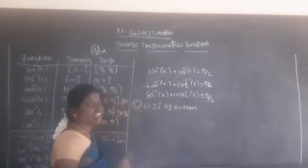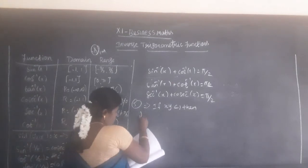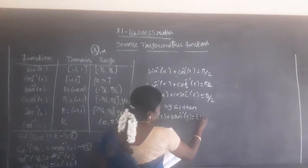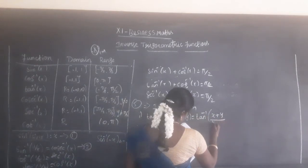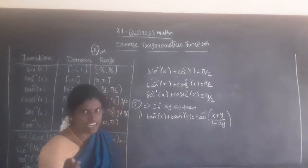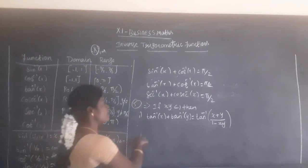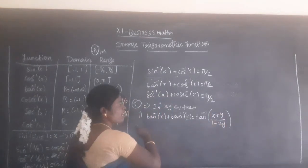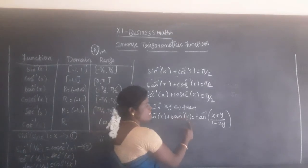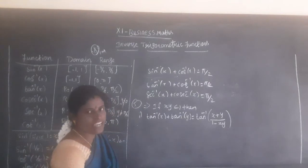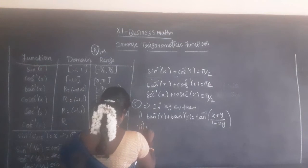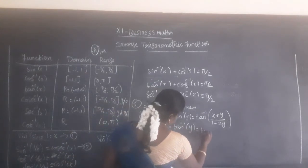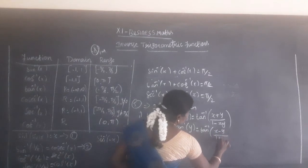The fifth property: if x times y is less than 1, then tan inverse of x plus tan inverse of y equals tan inverse of (x plus y) divided by (1 minus xy). This comes from the standard formula: tan(a plus b) equals (tan a plus tan b) divided by (1 minus tan a tan b). Also, tan inverse of x minus tan inverse of y equals tan inverse of (x minus y) divided by (1 plus xy).